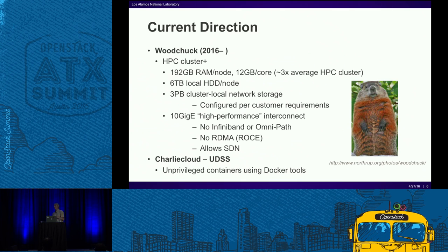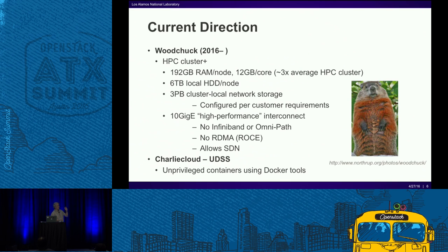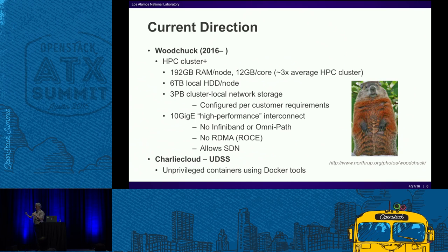SDN gives us the ability to let users run whatever image they want and then VXLAN their allocation into its own sandbox, isolating their networking from everybody else on the cluster. It also lets us do unique things like plop a protected database on the back-end network and VLAN in at runtime only the compute nodes that need access to it. If there's no job running by a specific user, no one can see the database except a management machine.